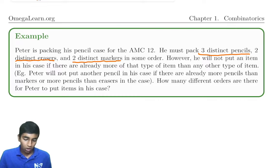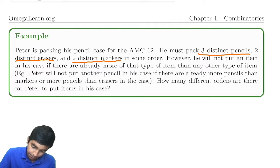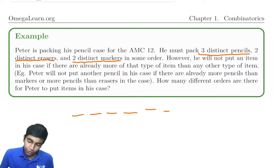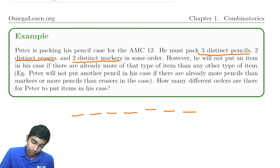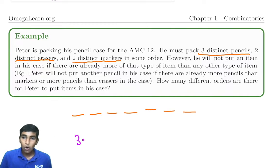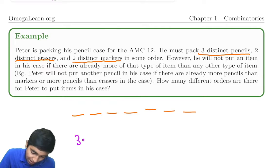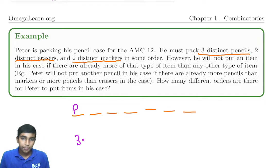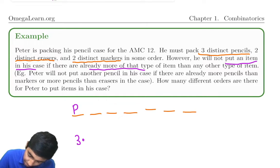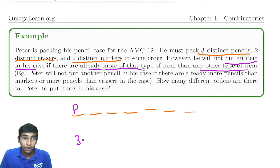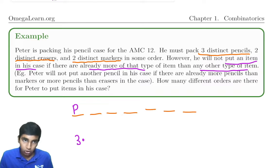Let's take this item by item. For the first item, it can be a pencil, an eraser, or a marker — so we just have three choices. Now for the second item, let's say the first item we chose is a pencil. The condition says he will not put an item in his case if there are already more of that type than any other. Since there's one pencil and zero markers and erasers, we can't put another pencil. So we have to put a marker or an eraser — two choices.